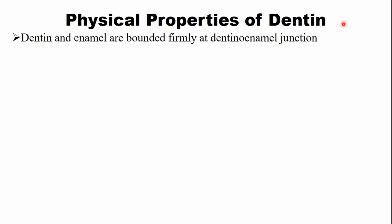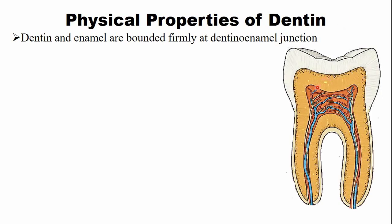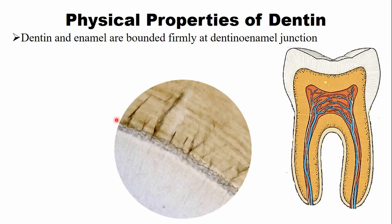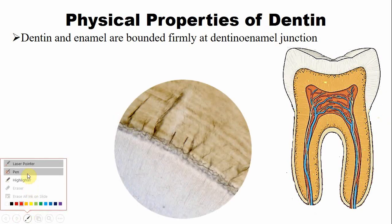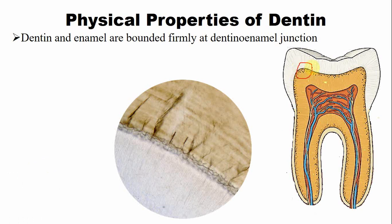Dentine and enamel are firmly bonded at the dentino-enamel junction (DEJ). On this histological image of the DEJ, you can see that the junction is not straight — it has a scalloped pattern that increases the surface area, allowing these two tissues to be firmly interlocked with each other.